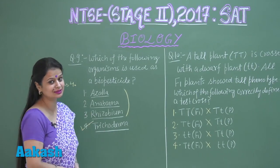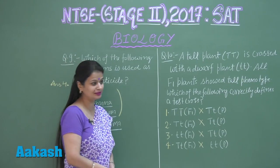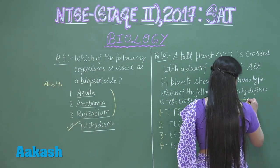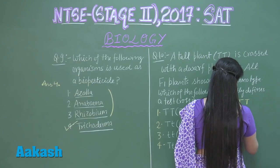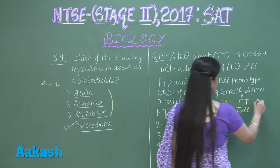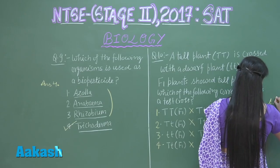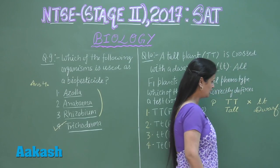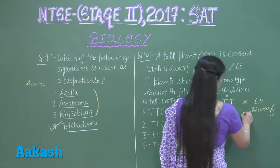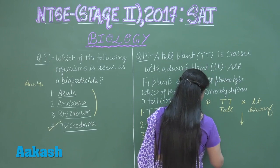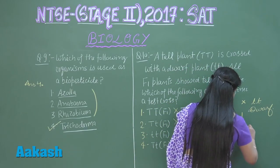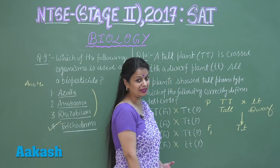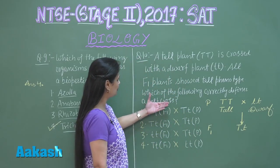Question number ten is related to genetics. There is a homozygous tall plant crossed with a homozygous recessive dwarf plant. When the cross is done, the F1 generation is obtained, and the F1 generation represents heterozygous tall plants. The question asks which option correctly defines a test cross.